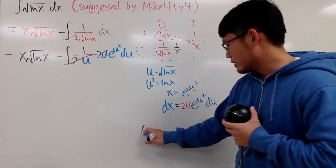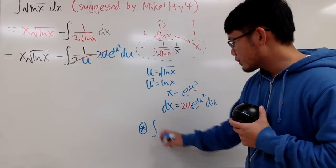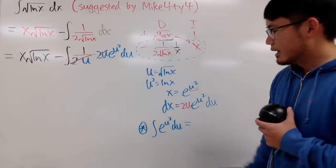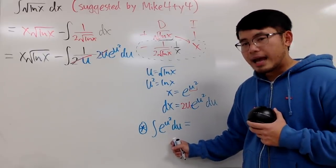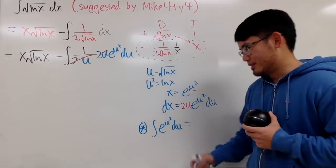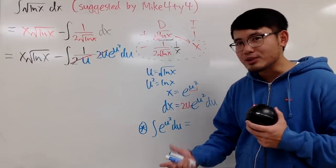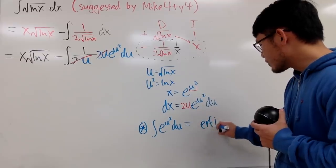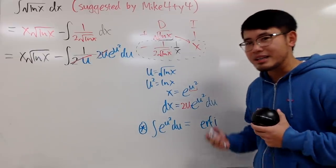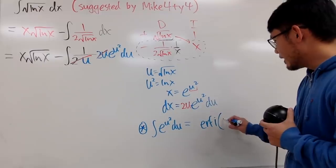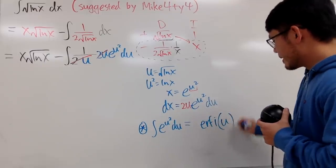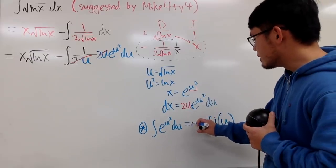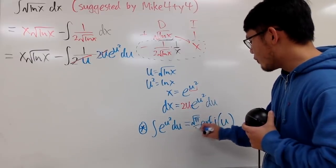So I'll just write this down right here for you guys. So notice, if you integrate e to the u-squared du, this integral has no elementary answer. But if you use the advanced function, called the imaginary error function, like this, you can actually get that to be done. Well, the input is still u, but you are going to multiply by a constant multiple, which is square root of pi over 2.